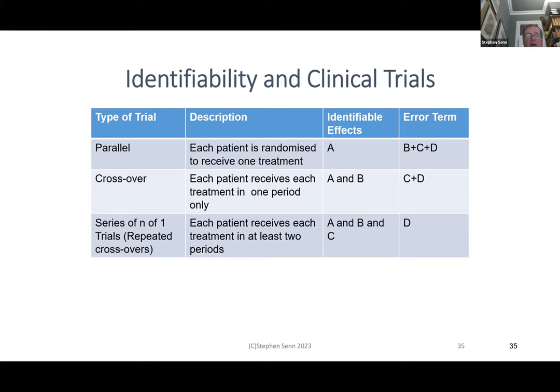In a crossover trial, each patient receives each treatment in one period only — you can identify the treatment effect and the between-patient variance, but the error term consists of C (the interaction) and D (within-patient variance) combined. In a series of N-of-1 trials or repeated crossovers where each patient receives each treatment in at least two periods, A, B, and C all become identifiable, and D — within-patient variability — becomes your residual error.